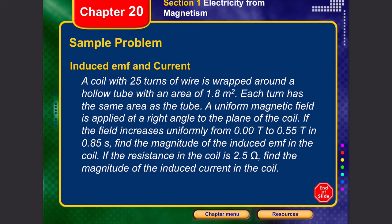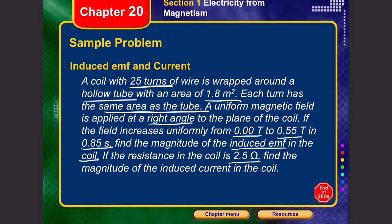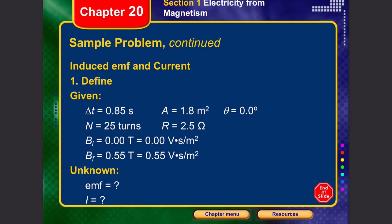Let's solve a problem. A coil with 25 turns of wire is wrapped around a hollow tube with an area of 1.8 square meters. A uniform magnetic field is applied at right angles to the plane of the coil, increasing uniformly from 0.0 to 0.55 tesla in 0.85 seconds. We need to find the magnitude of the induced EMF and, with a resistance of 2.5 ohms, the induced current.